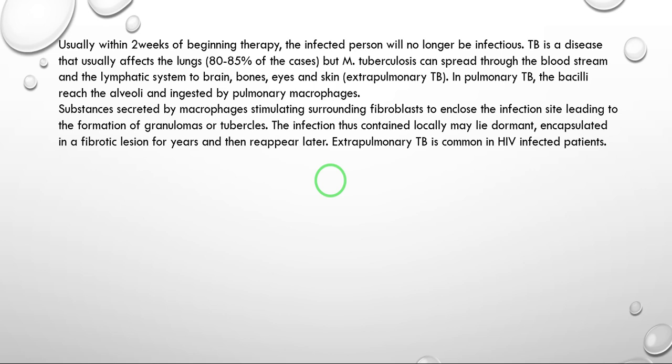When TB spreads beyond the lungs it is called extra-pulmonary TB. Generally 80 to 85 percent of cases are pulmonary TB, and the remaining 15 percent are extra-pulmonary TB. In pulmonary TB, the bacilli reach the alveoli.